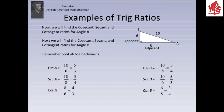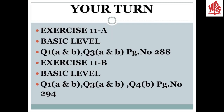Next, we will find the cosecant, secant, and cotangent ratios for angle B in a similar way. For angle B, AC is the opposite side and BC is the adjacent side. Now, students, it's your turn to practice. Attempt the questions from your book, exercise D2. I hope you all understood the topic very well and will make the most of it. Thank you.